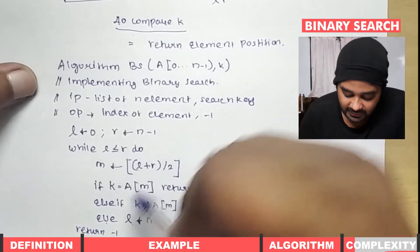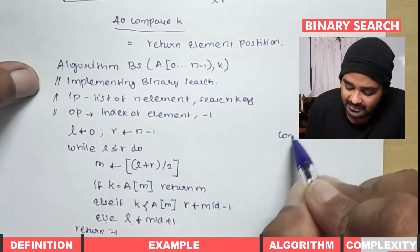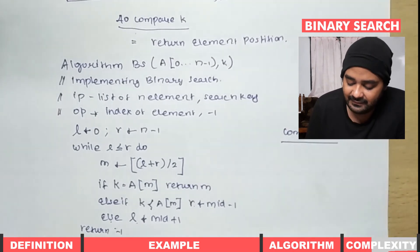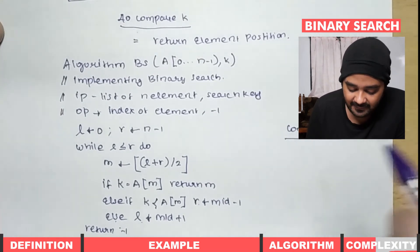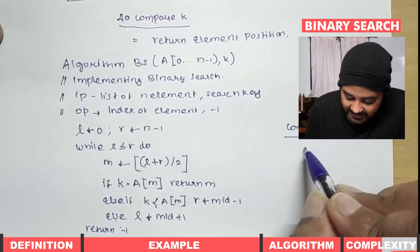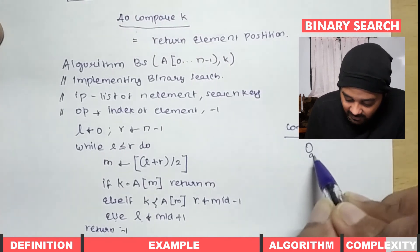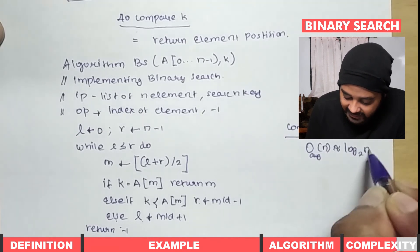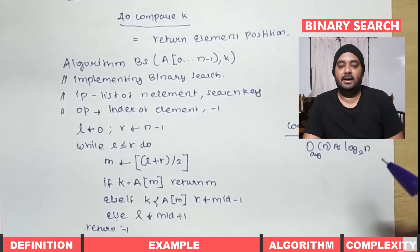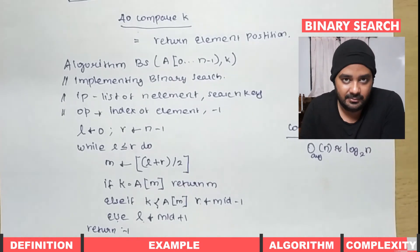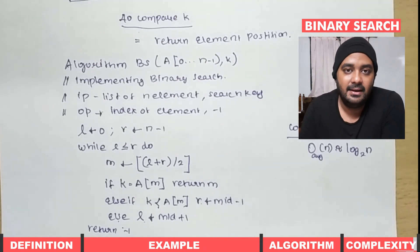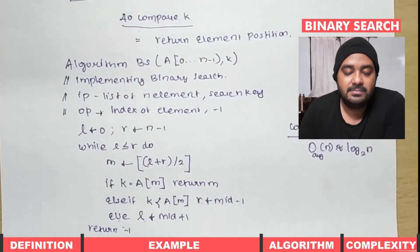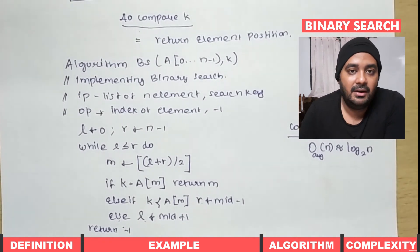If the element is not found, we return -1. For complexity: each time the list size reduces by half. The average time complexity is O(log₂ n), because each operation decreases the problem size by half. This is how binary search algorithm works.